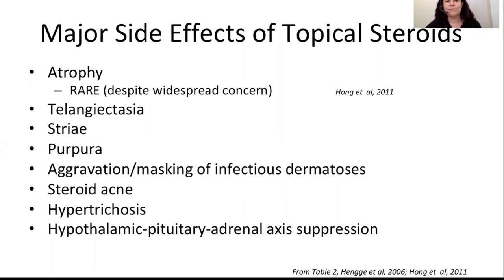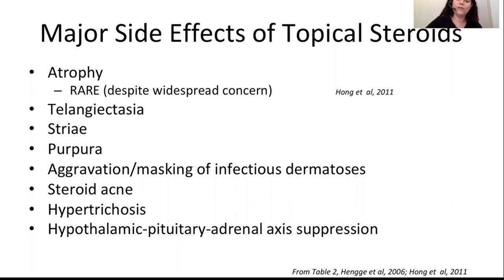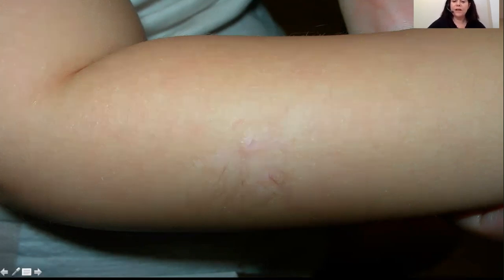Side effects of topical corticosteroids can include atrophy or thinning of the skin — a concern for many patients and practitioners — but it's actually rare with proper usage. Other possible side effects include telangiectasia, striae, purpura, aggravation or masking of infectious dermatoses, steroid acne, hypertrichosis, and HPA axis suppression, which typically occurs only with much stronger cortisones with extensive use. Of all these possible side effects, only striae would be considered non-reversible.